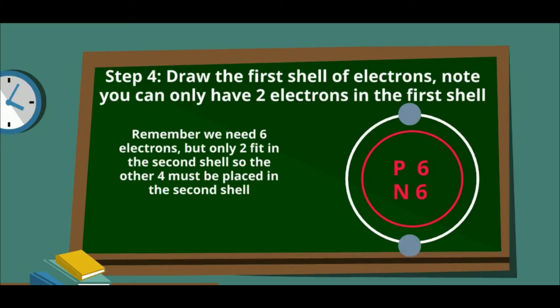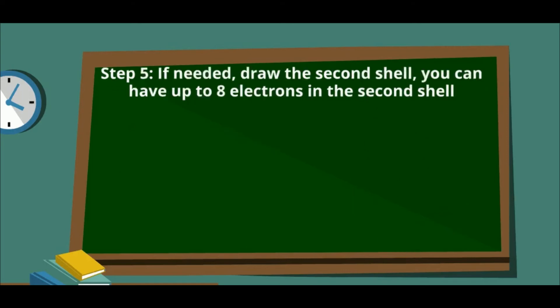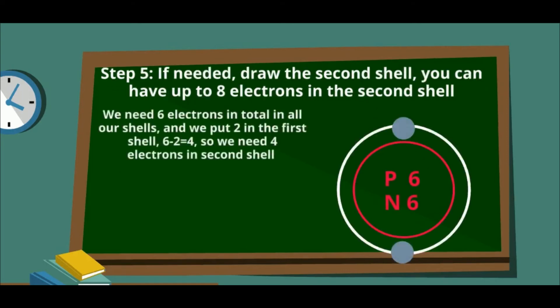But remember, we need six electrons. So we put two in the first shell, and the next four electrons go into the second shell. We know that we must have four electrons in the second shell to have a total of six electrons.